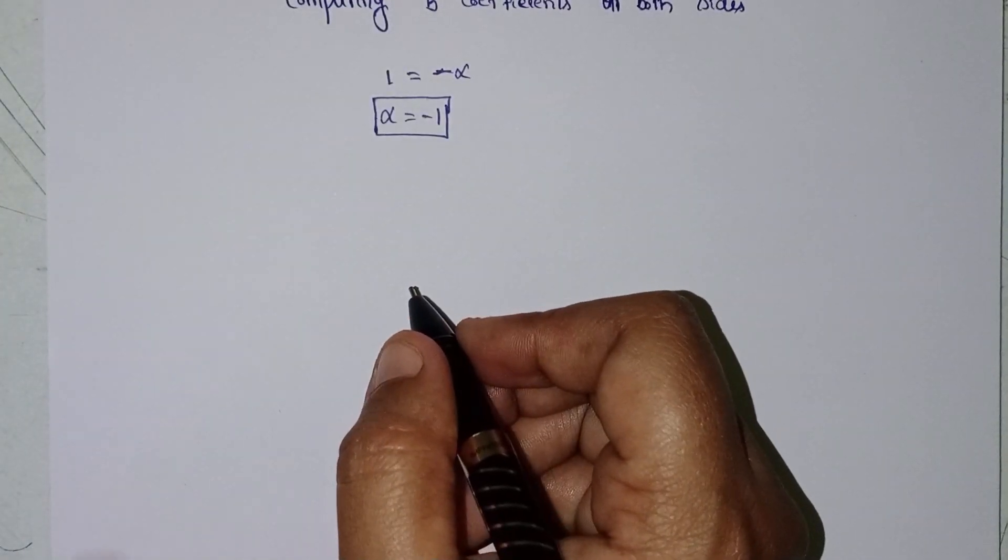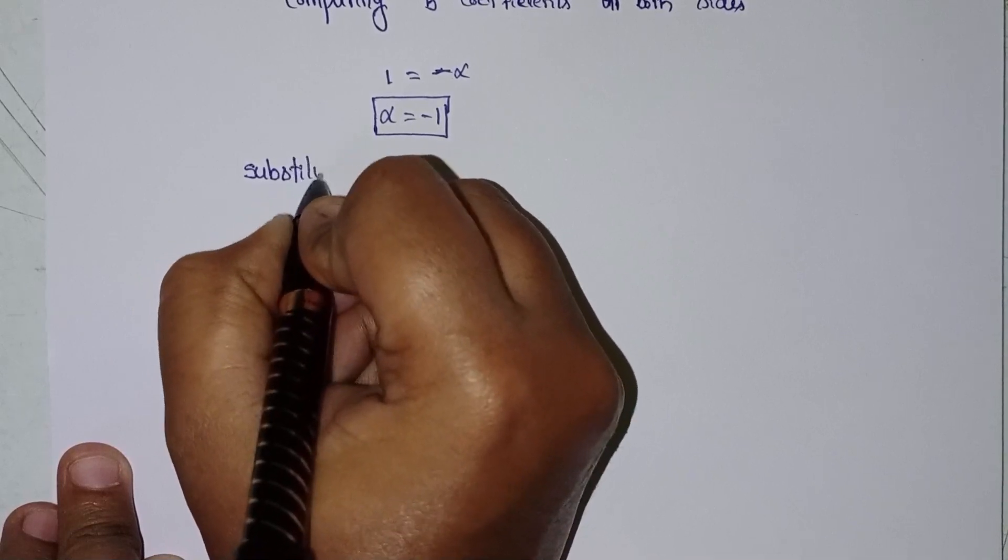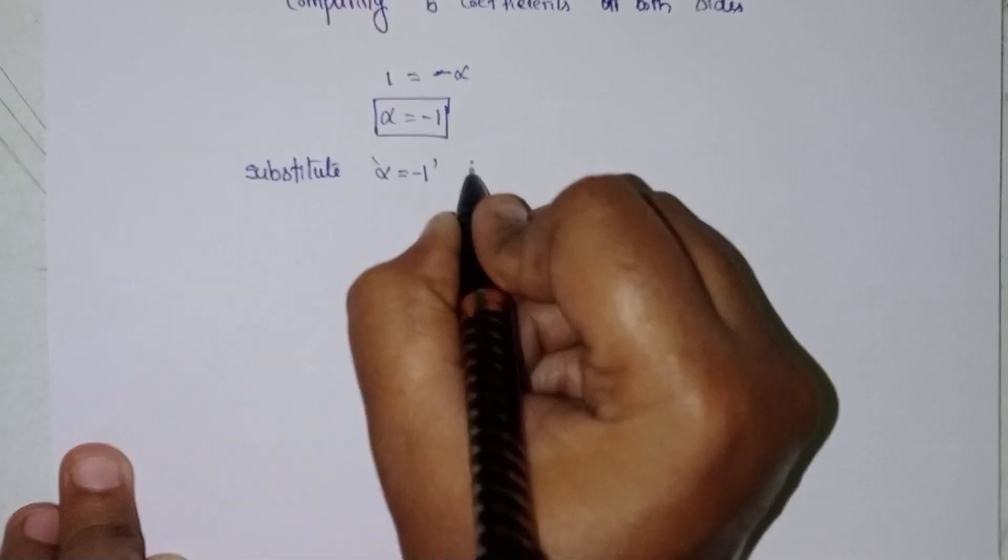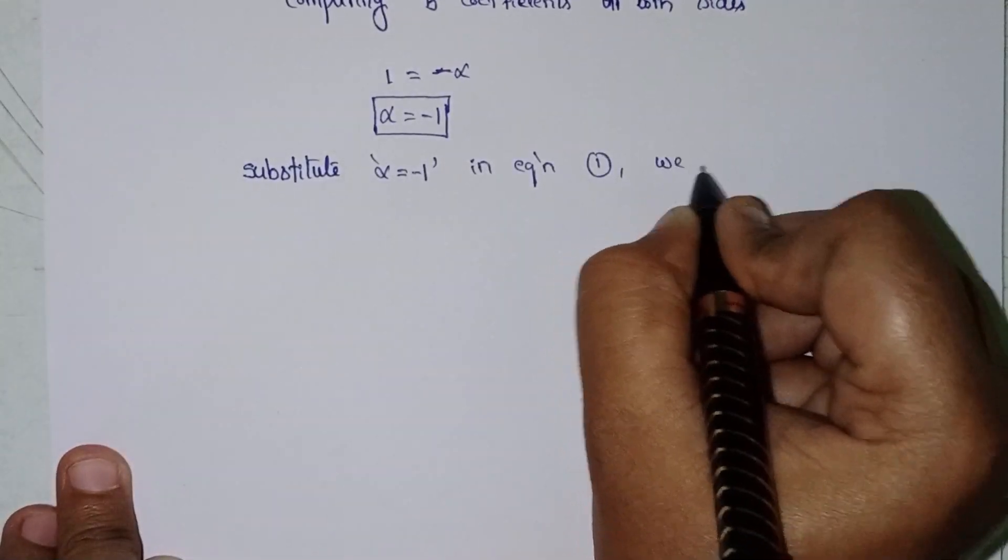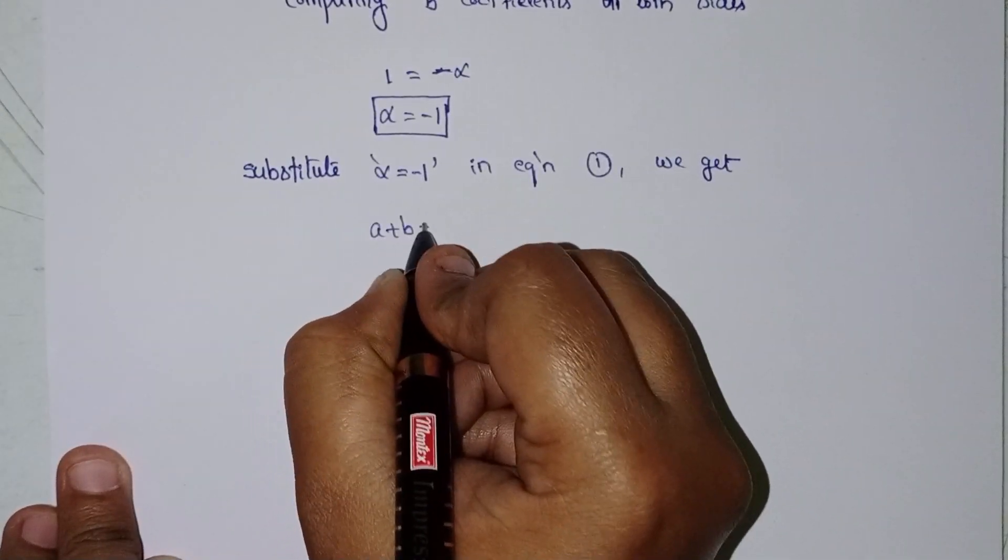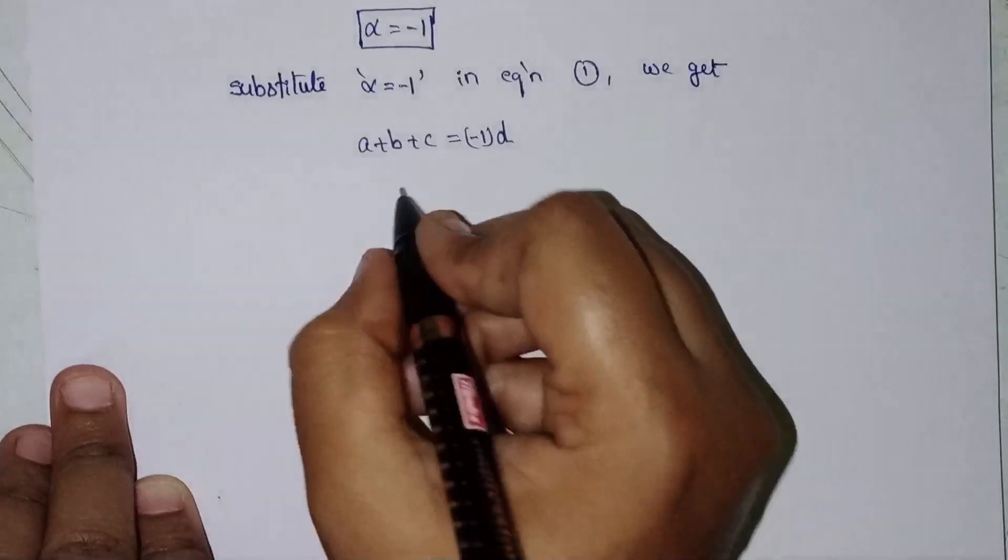Now alpha equal to minus 1. Then in equation 1, we get a plus b plus c equal to minus 1 into d.